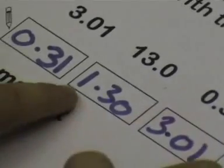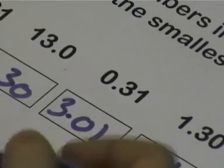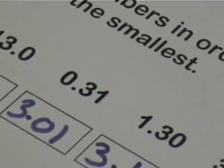Can you explain why 13.0 is bigger than 1.30? Because 1.30, that's only got one. But the 13.0 has got one and three. So it's bigger.